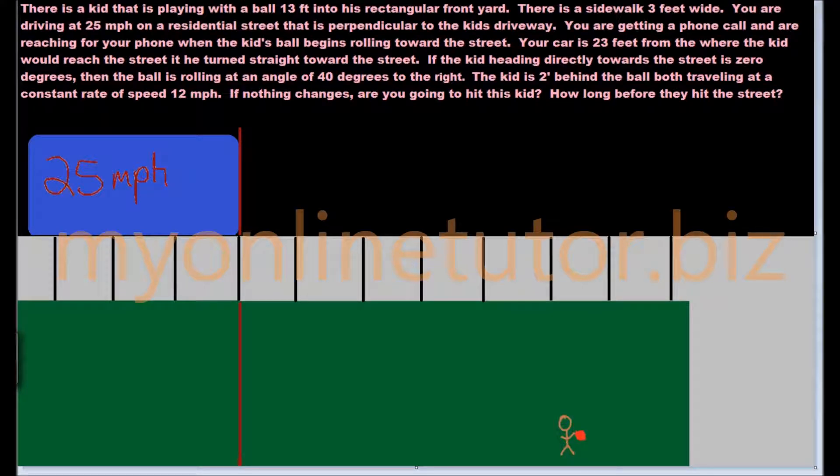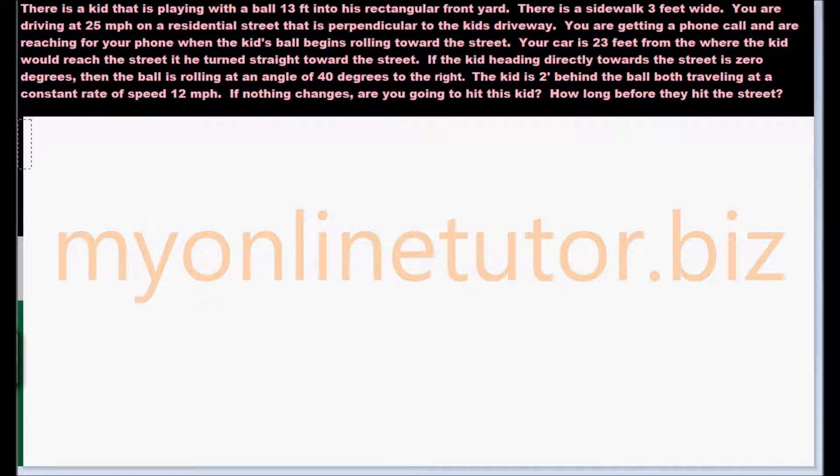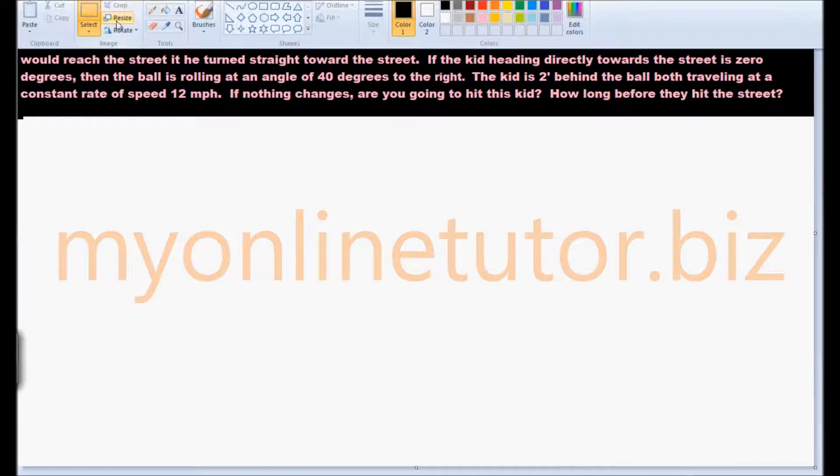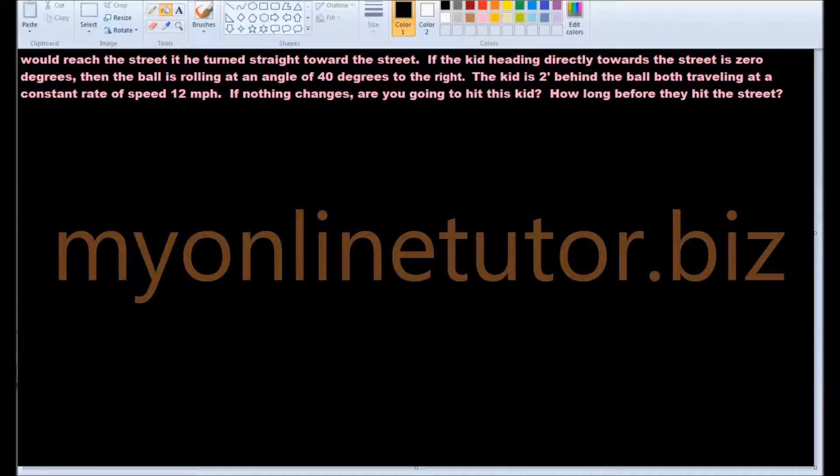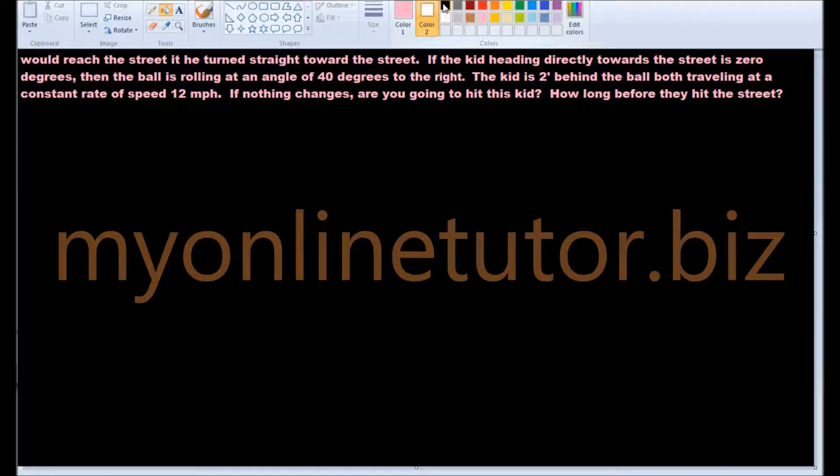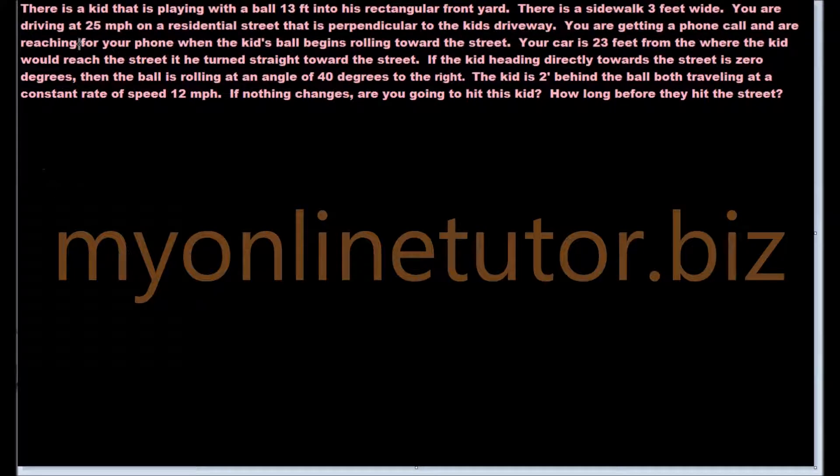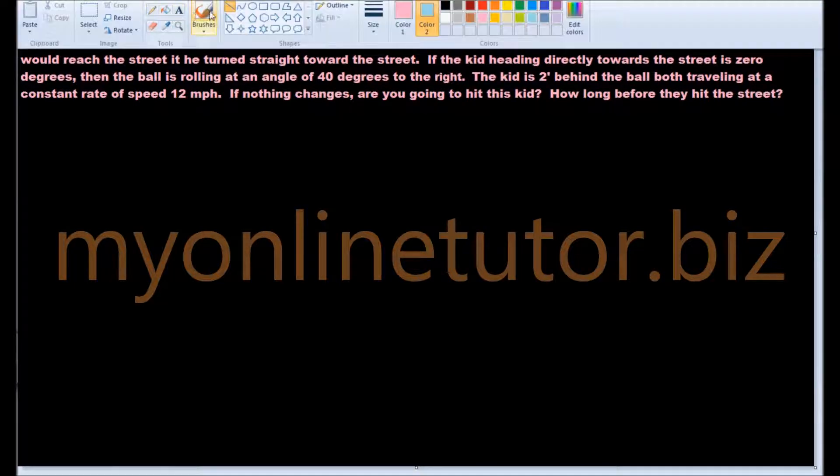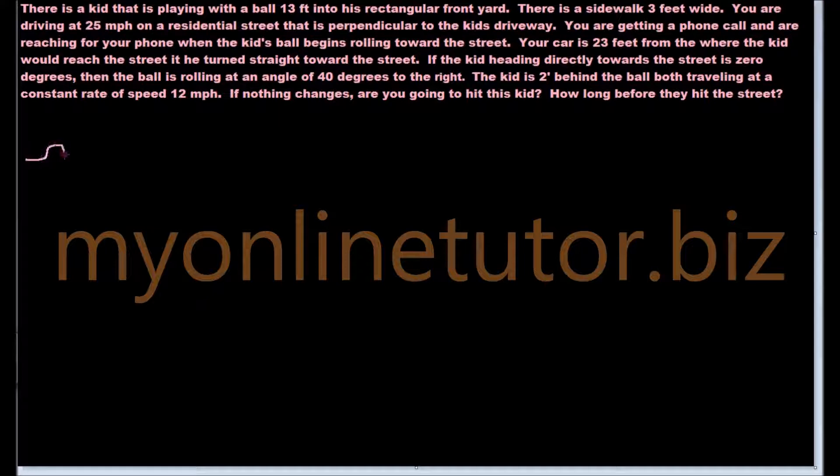There's a kid that is playing with a ball 13 feet into his rectangular front yard. There's a sidewalk three feet wide. You're driving at 25 miles per hour on a residential street that is perpendicular to the kid's driveway. You are getting a phone call and are reaching for that phone when the kid's ball begins rolling towards the street. Your car is 23 feet from where the kid would reach the street if he turned straight toward the street. If the kid heading directly towards the street is zero degrees, then the ball is rolling at an angle of 40 degrees to the right. The kid is two feet behind the ball, both traveling at a constant rate of speed, 12 miles an hour. If nothing changes, are you going to hit this kid? How long before they hit the street?